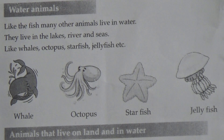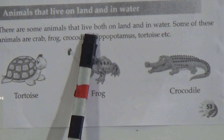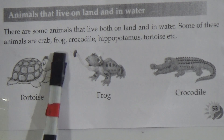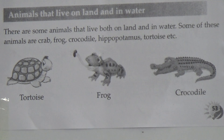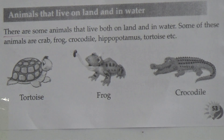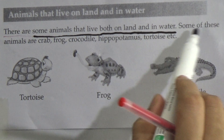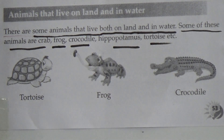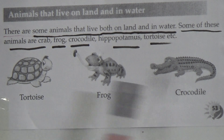Now, animals that live on land and in water. There are some animals that live both on land and in water. Some of these animals are crab, frog, crocodile, hippopotamus and tortoise. My dear students, underline this line. All of these animals live on land and in water.